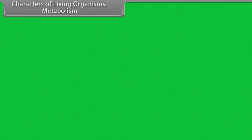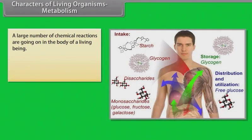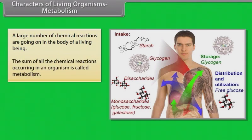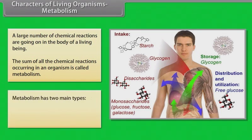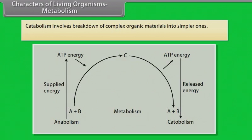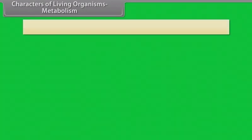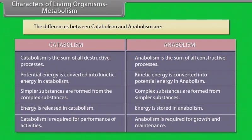A large number of chemical reactions are going on in the body of a living being. The sum of all the chemical reactions occurring in an organism is called metabolism. Metabolism has two main types: catabolism and anabolism. Catabolism involves breakdown of complex organic materials into simpler ones. Anabolism involves building up of complex organic substances from simpler ones.